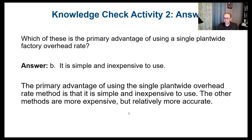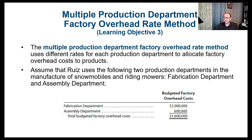Now let's look at the second method — a little bit more complex, but it gives us better calculations. The second method is called the multiple production department factory overhead rate method. This method uses different rates for each production department to allocate factory overhead costs to products. Assume that Rose Company uses two production departments: a fabrication department and an assembly department.